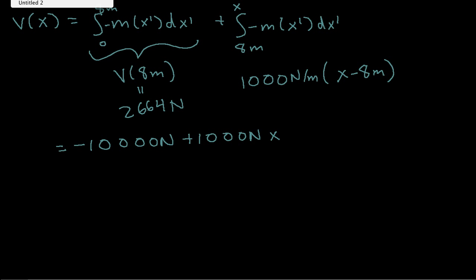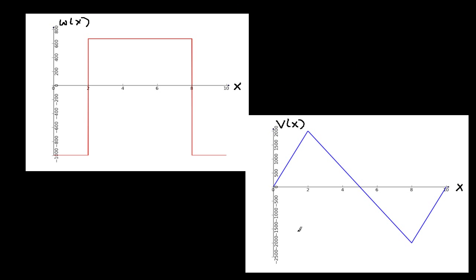I have the shear diagram plotted. You can see that as x starts at 0 and increases, v(x) goes up with a slope of 1,000 newtons per meter, then goes down with a slope of minus 667 newtons per meter, and then goes back up with a slope of 1,000 newtons per meter. Hopefully it's clear that the slope dV/dx equals minus w(x), and v(x) is the integral of minus w(x). That will end part 1 of this video. Stay tuned for part 2, in which we find the bending moments.